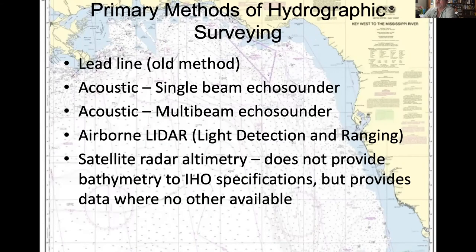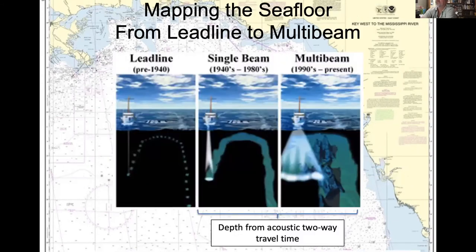The primary methods of hydrographic surveying include lead lines — a weight on a marked rope to measure depth — though currents can cause drag and inaccurate readings. Acoustic methods were then developed: first single-beam echo sounders and then multi-beam echo sounders. There is also airborne lidar (light detection and ranging), and satellite radar altimetry, which does not provide bathymetry to IHO specifications but provides data where no other data is available.